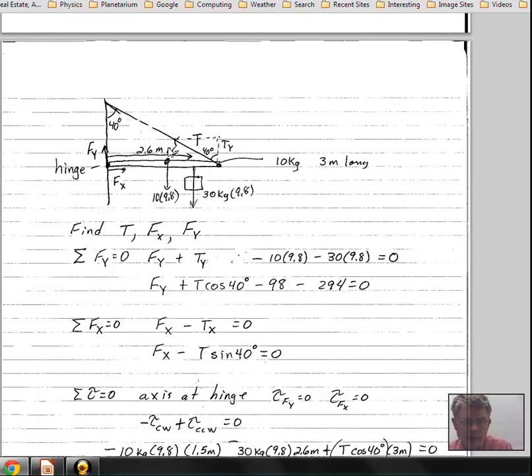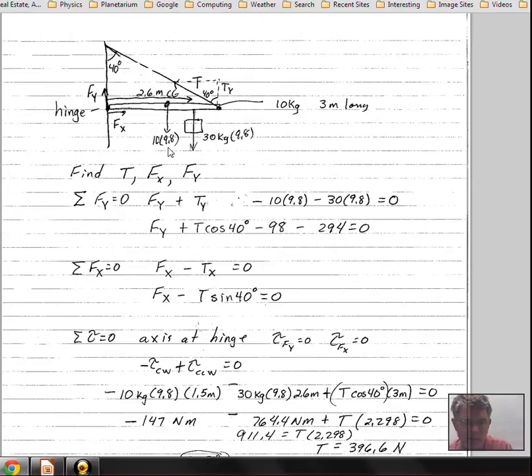So let's balance the clockwise and the counterclockwise torques. So choosing the center of gravity of the object, the mass, 10 kilograms times 9.8, it's 1.5 meters for lever arm. And those are perpendicular, the force in the lever arm, so we're okay.